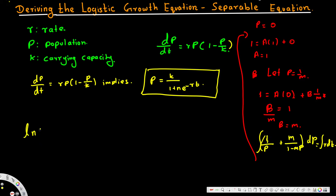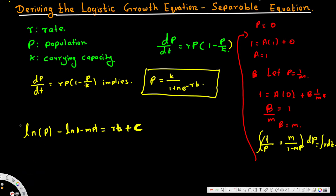Integrating 1 over p gives ln(p), and integrating m over (1 minus mp) gives ln(1 minus mp). That equals r·t plus a constant. We can combine both constants together and write it as a single constant.